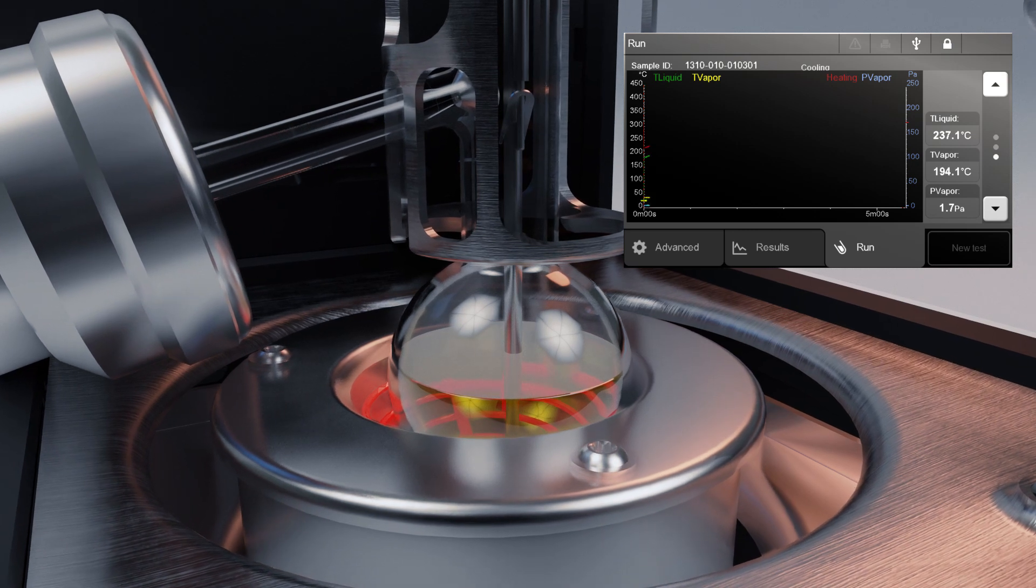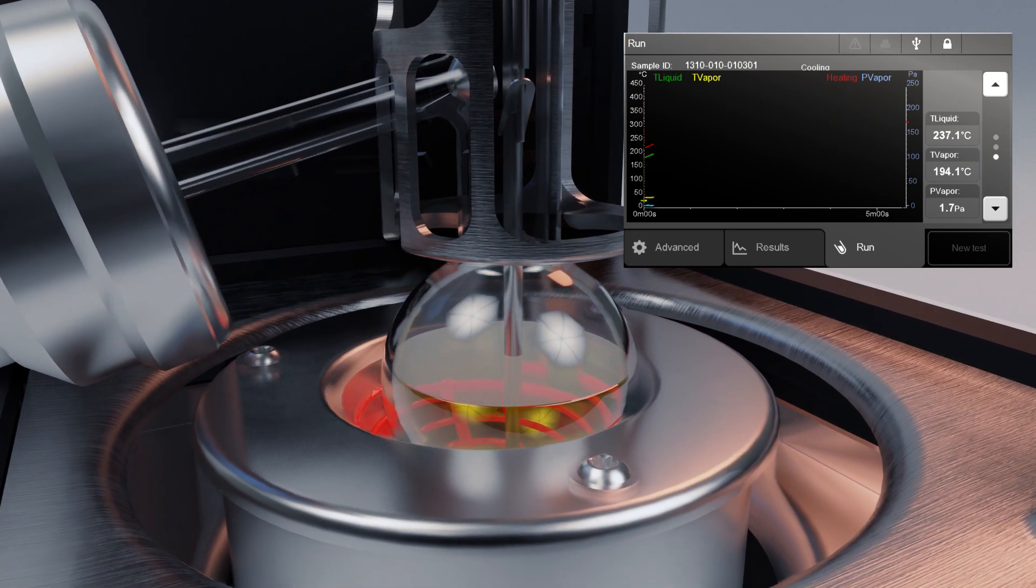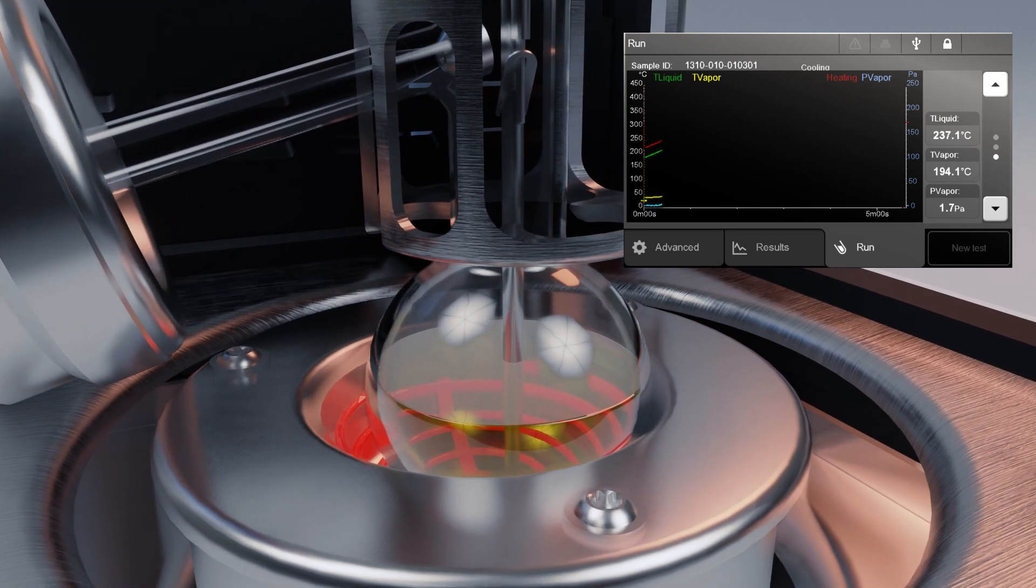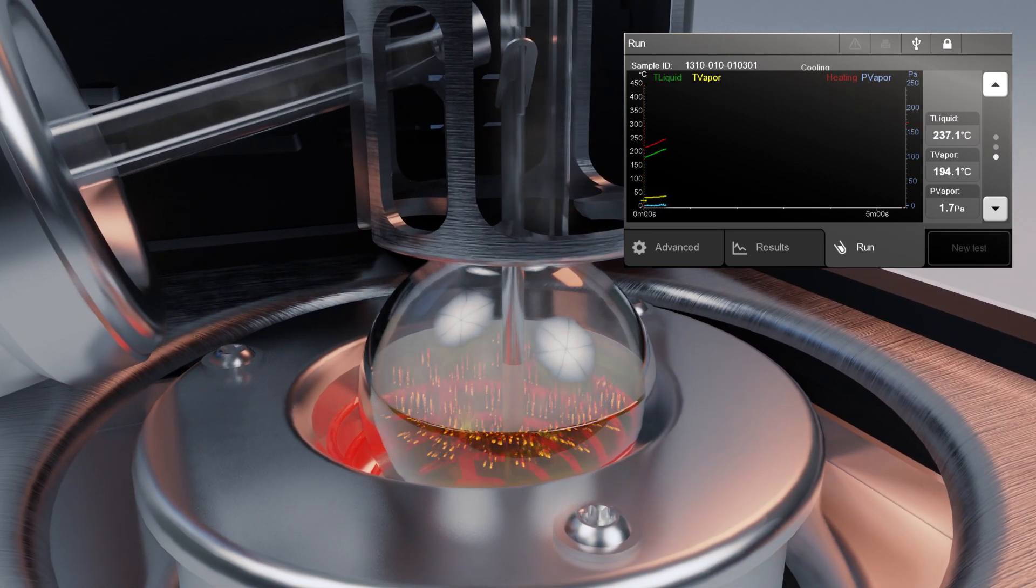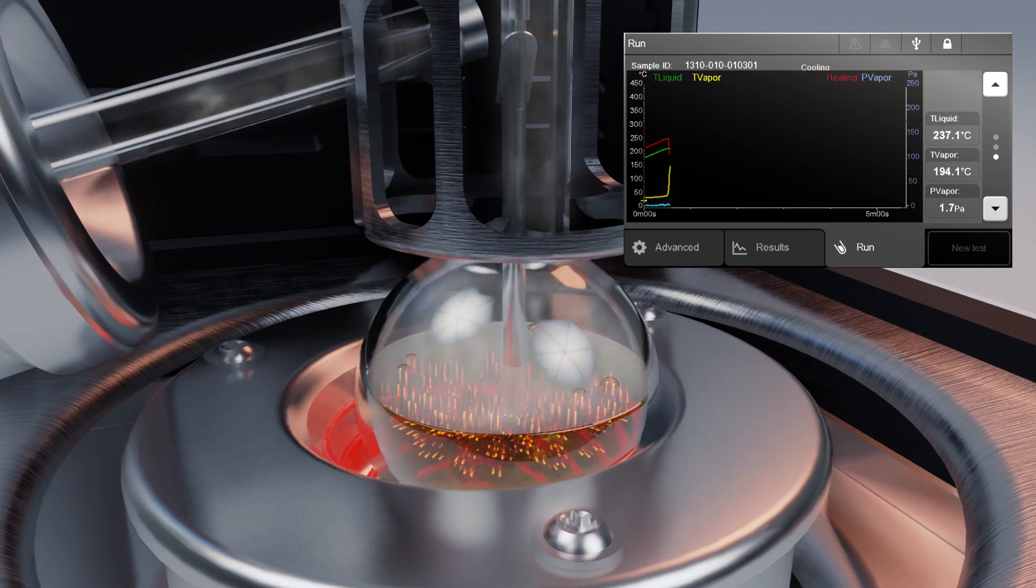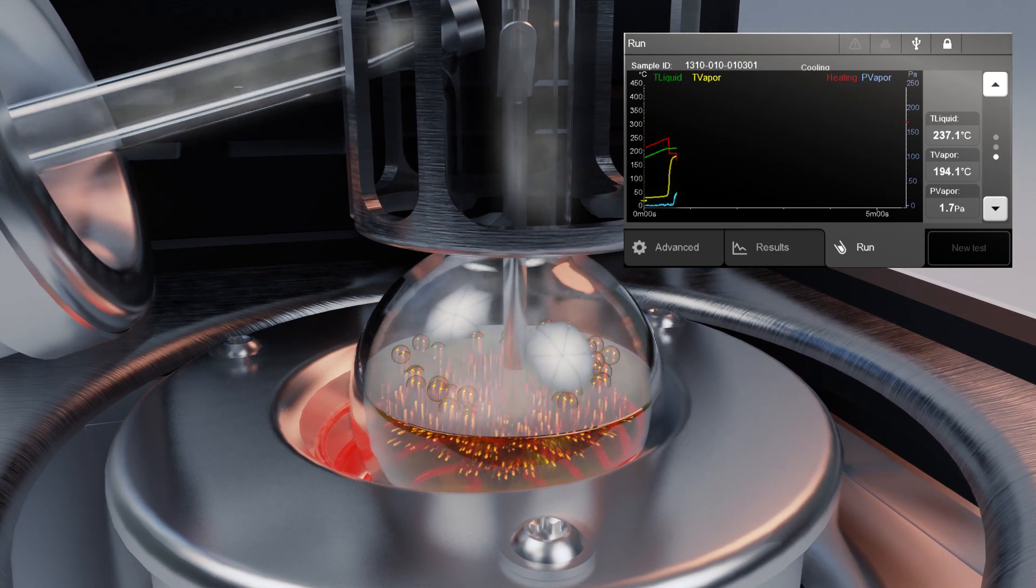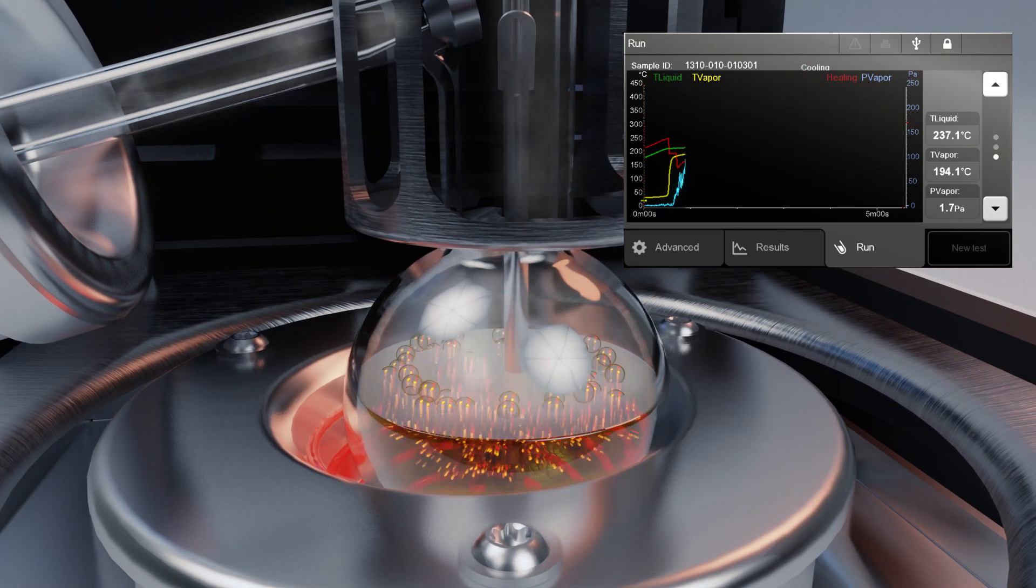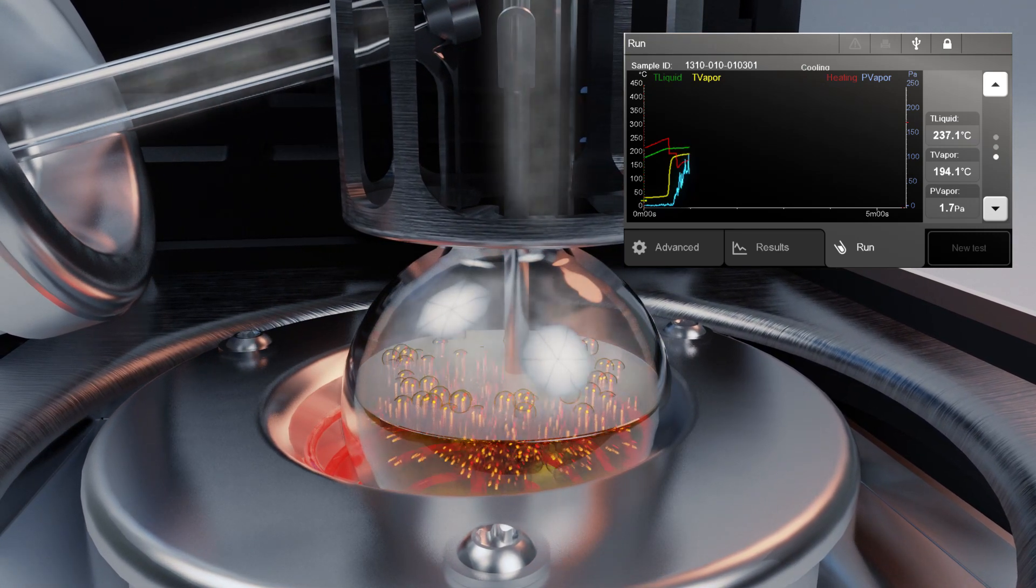Heat is applied to the bottom of the flask as soon as the test is started. The liquid temperature begins to rise, as shown by the green line. After a few seconds, the pressure inside the flask, indicated by the blue line, and the vapor temperature in yellow also begin to rise. When the pressure increases, this means the initial boiling point has been reached and the physical distillation process has begun.